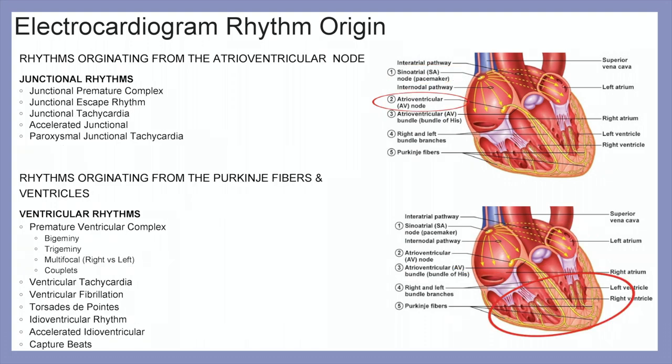Rhythms originating from the atrioventricular node — the AV node — are our junctional rhythms. These include junctional premature complexes, junctional escape rhythms, junctional tachycardia, accelerated junctional rhythms, and paroxysmal junctional tachycardias.